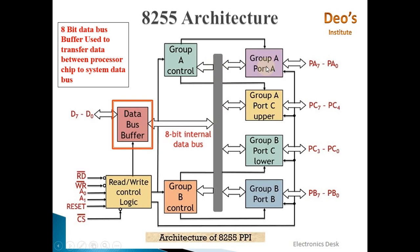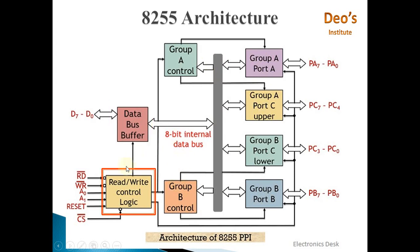Through the internal data bus, data can be transferred to Port A, Port B, Port C, or the group controls. Next, we have the read/write control logic, which is helpful in controlling read/write operations as well as the port selection operation.